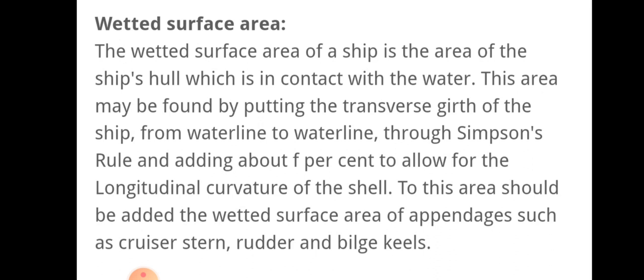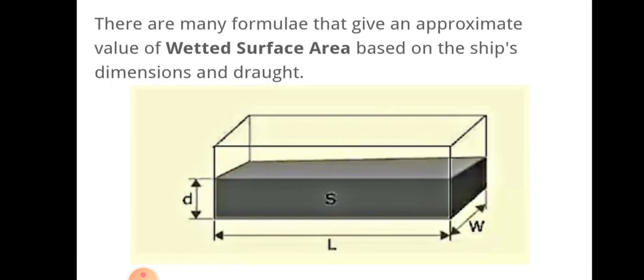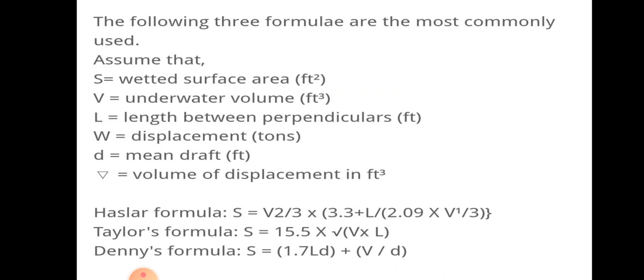There are many formulas that give an approximate value of wetted surface area based on the ship's dimensions and draft. The most commonly used variables are: S = wetted surface area in square feet, V = underwater volume, L = length between perpendiculars, W = displacement, D = mean draft, and delta = volume of displacement.